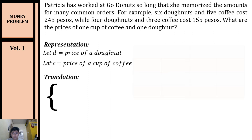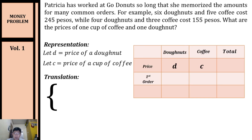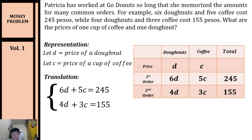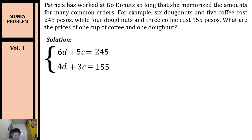Now that we have our representation, let's translate our word problem to a system of linear equations. One common order is six donuts and five coffees costing 245 pesos. The other order is four donuts and three coffees costing 155 pesos. So our first equation is: 6d + 5c = 245. Our second equation is: 4d + 3c = 155.